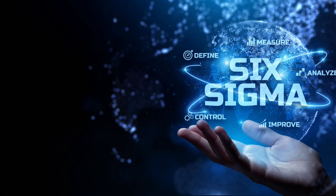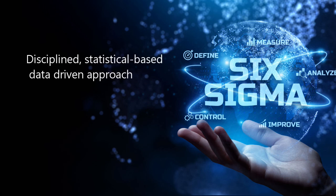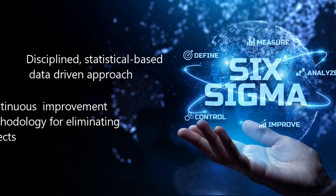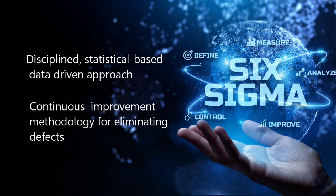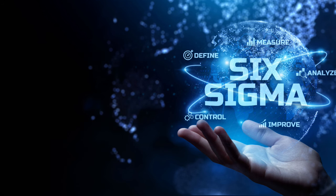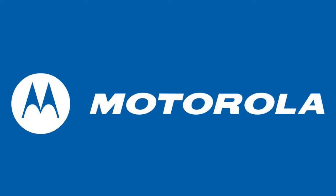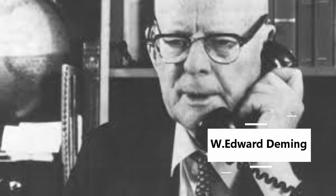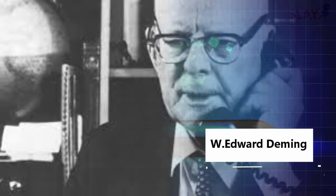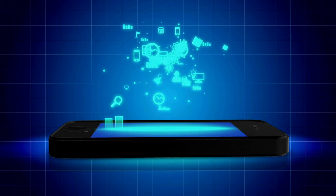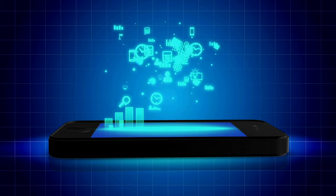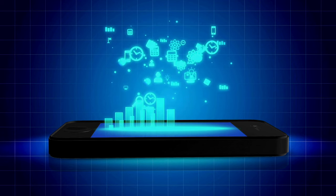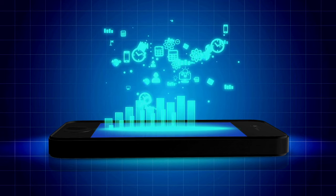What is Six Sigma? It's a disciplined, statistical-based, data-driven approach and continuous improvement methodology for eliminating defects in product, process, or service. It was developed by Motorola in the early 1980s. The approach was based on methods taught by Dr. William Edward Deming and others, and became a popular management approach at GE in the early 1990s. It's built on quality management fundamentals and companies around the world have adopted Six Sigma as a way of doing business.